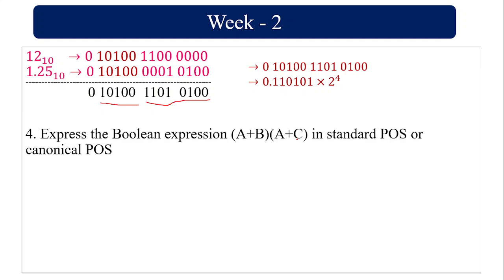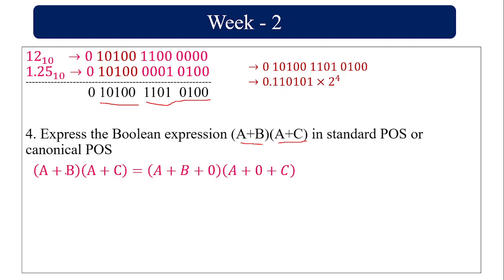Express the Boolean expression (A plus B) into (A plus C) in standard POS or canonical form. POS is product of sum — each factor is a sum term, and multiplying them gives the product of sum terms. Canonical form requires each term to have all variables. Here we have 3 variables: A, B, C. In the first product, C is missing; in the second product, B is missing. Adding 0 does not change the value of an expression.